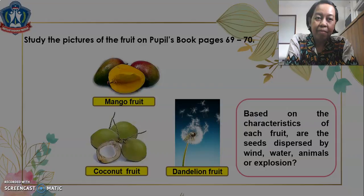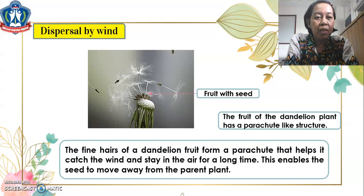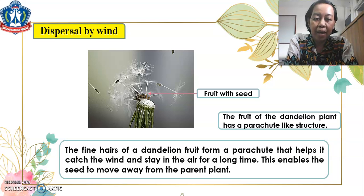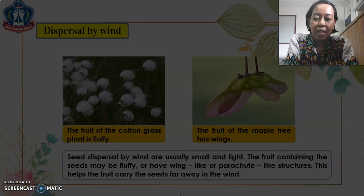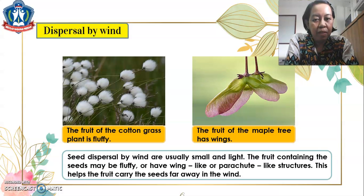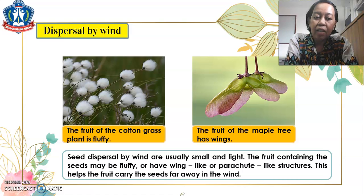First, we will discuss dispersal by wind. The fine hairs of a dandelion fruit form a parachute that helps it catch the wind and stay in the air for a long time, enabling the seed to move away from the parent plant. Another example: the fruit of the cotton grass plant is fluffy, and the fruit of the maple tree has wings. Seeds dispersed by wind are usually small and light. The fruit containing the seeds can be fluffy or have wing-like or parachute-like structures, which help carry the seeds far away in the wind.